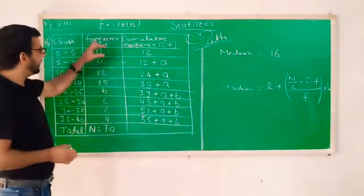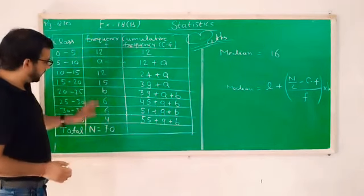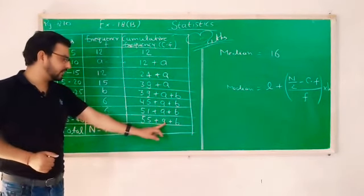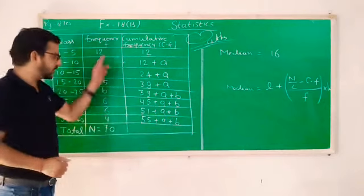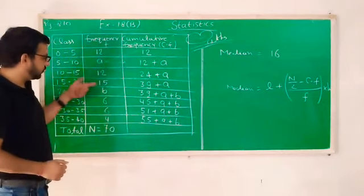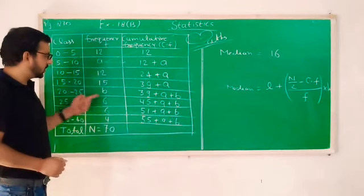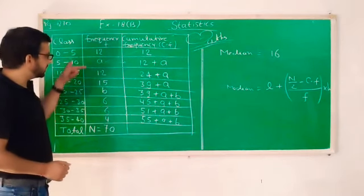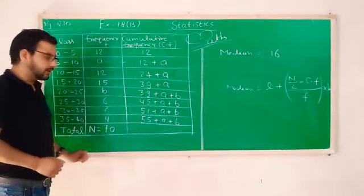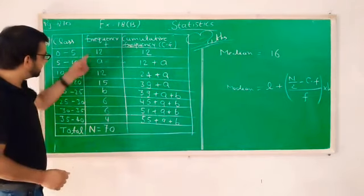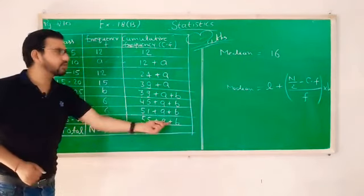But if we sum sigma f, that should also give 55 plus a plus b. See, 12, 12, 24, and 6, 6, 12, 36 and plus 4, 40 and 15, 55 plus a plus b. Clear? So first work is to frame an equation from this sigma f.